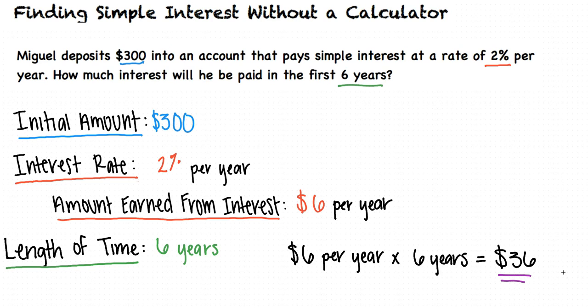So when we are asked to calculate simple interest, we must identify the initial amount of money, the interest rate, and the length of time in order to determine the amount of money that will be paid in the end. Exactly.